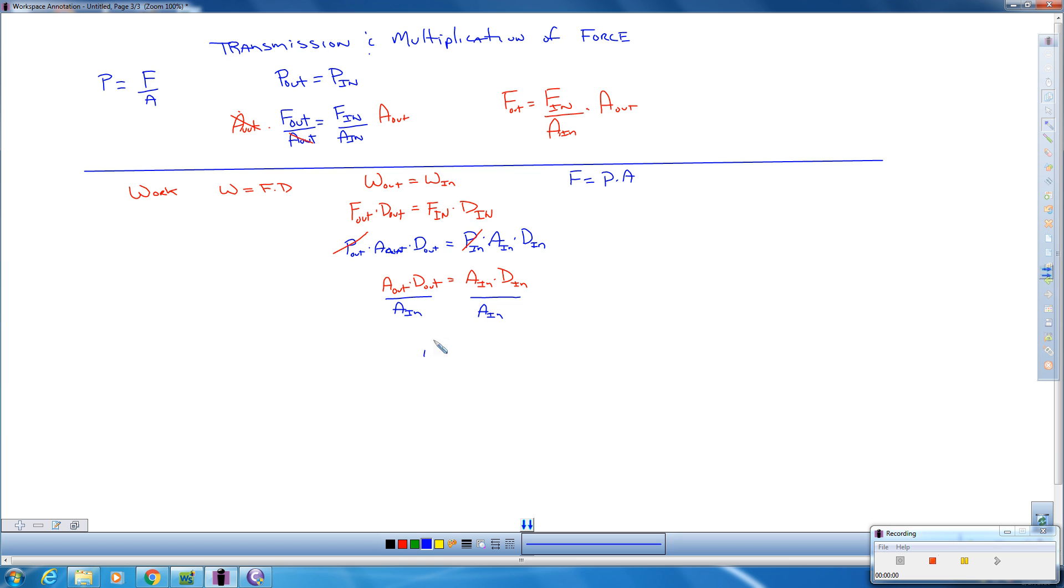So we know that area out times the distance out divided by area in is going to give us our distance in. Our input distance that we need to calculate and find.